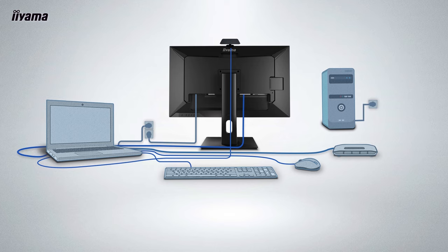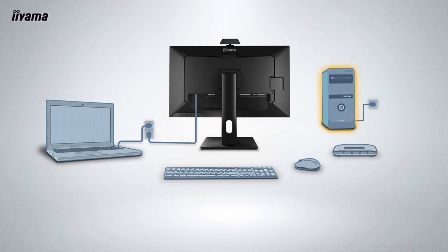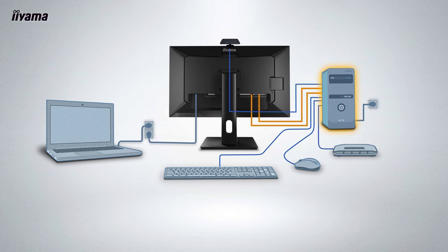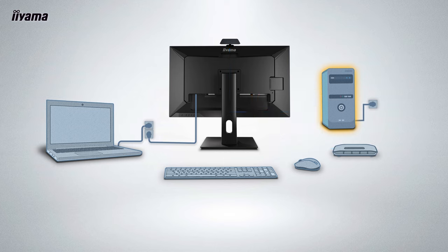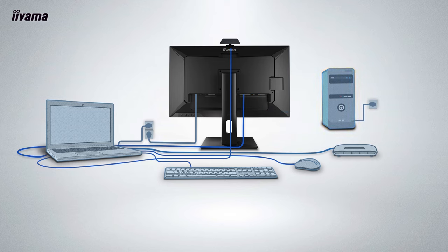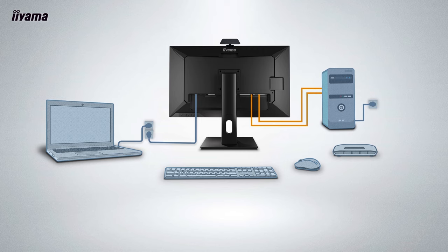When you want to switch from your laptop to your PC, you must disconnect all the cables from your laptop and connect them to the PC. This includes your keyboard, mouse, and other USB devices you are using while working on your laptop. Ultimately, each time you want to switch between computers, you must unplug cables or USB receivers from one computer and plug them all into the other.